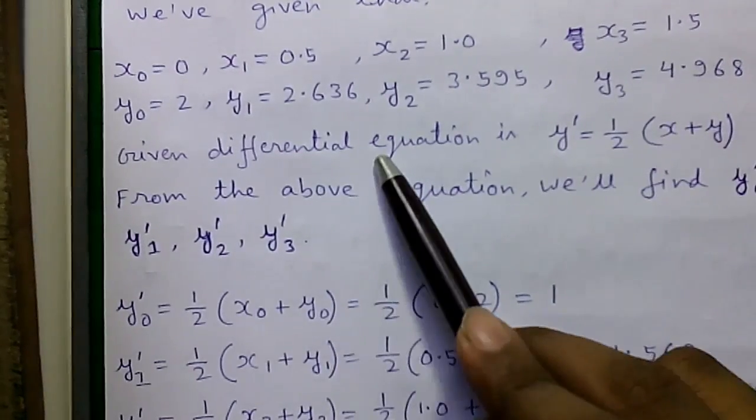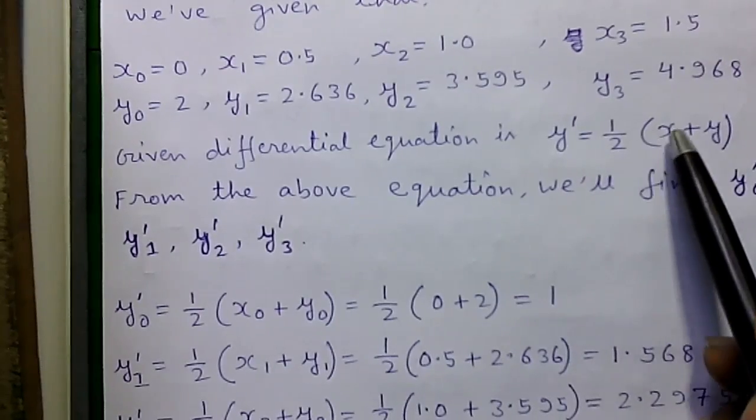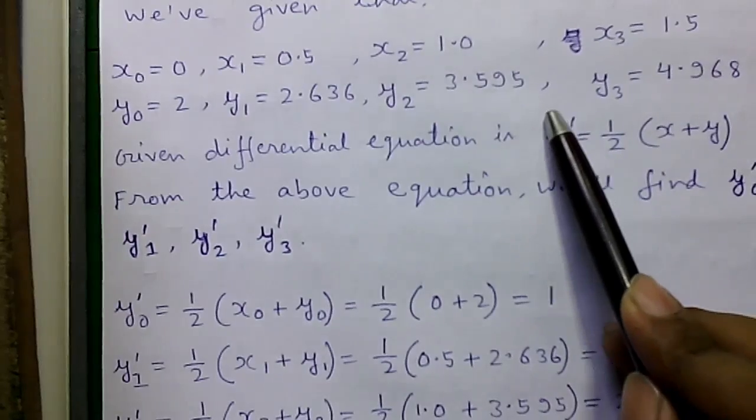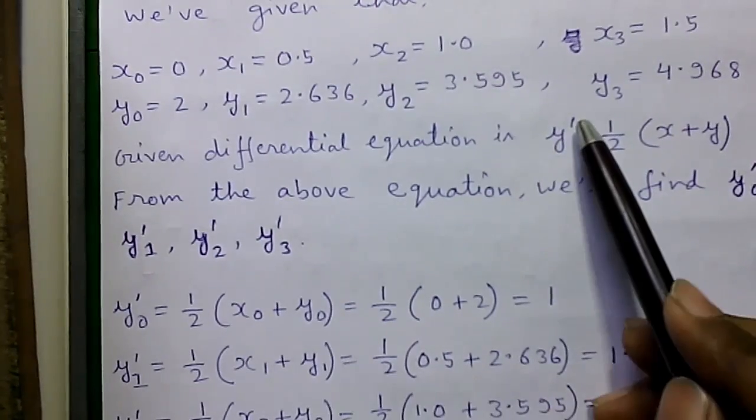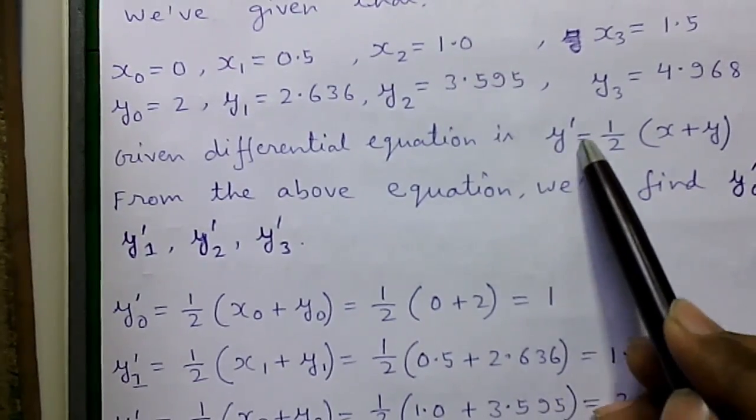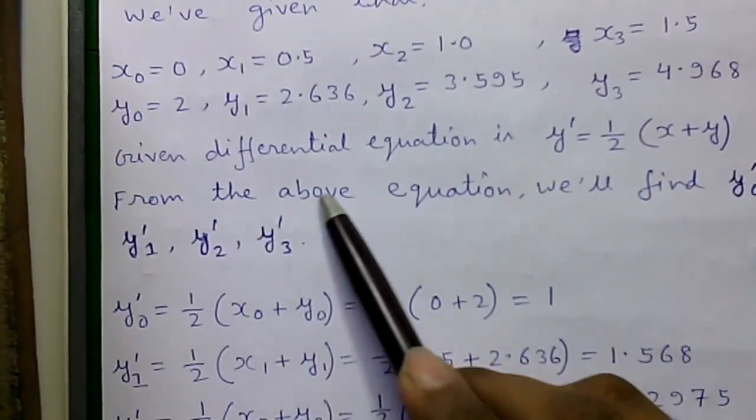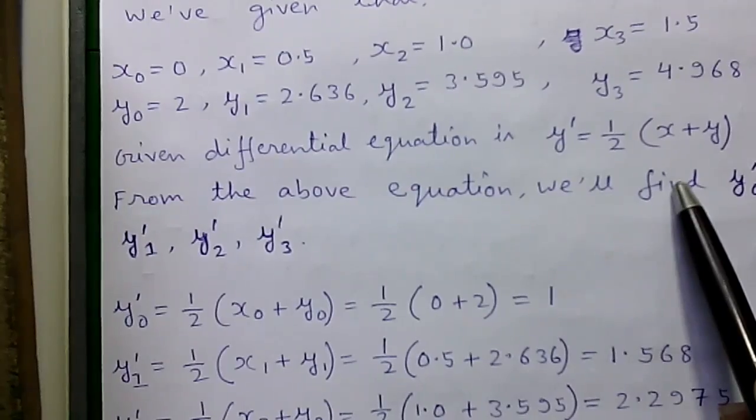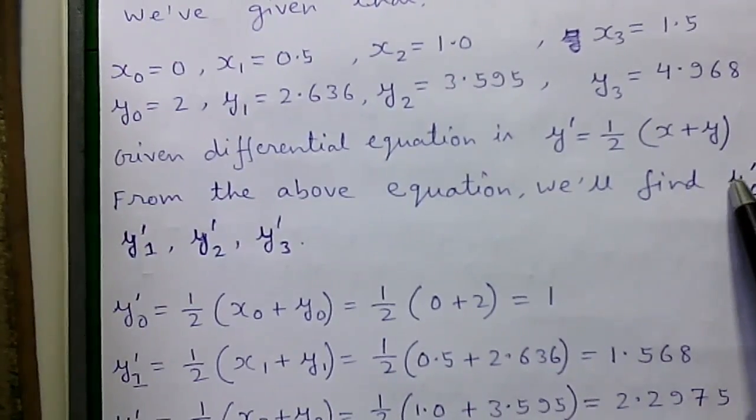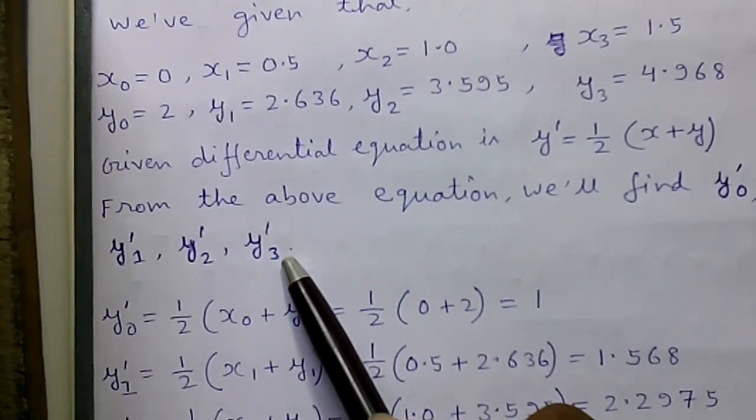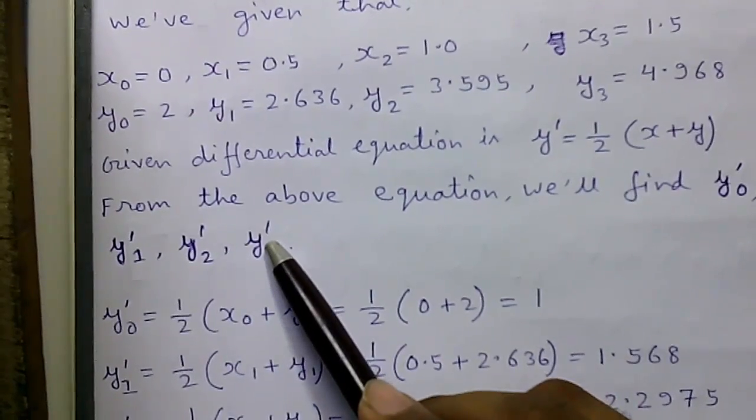And given differential equation is y dash equals to half into x plus y. Where dy by dx is written in short as y dash. And y double dash means d square y by dx that is double differentiation. So, from the above equation we will find out y dash 0, y dash 1, y dash 2, y dash 3 to apply in the formula.